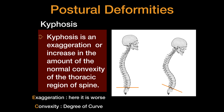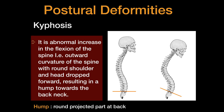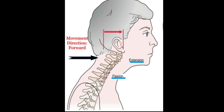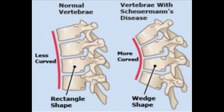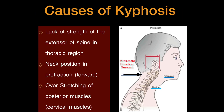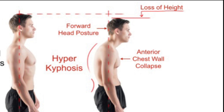Kyphosis is an exaggeration or increase in the amount of the normal convexity of the thoracic region of the spine. We can consider exaggeration as a worsened situation where the curve is more outward, not maintaining the normal neutral shape of the spine — it projects outside just like a hump. The neck position leans forward in a protraction phase, shifting from the center of gravity. To maintain that posture, the shoulder and neck region muscles are overused over time.